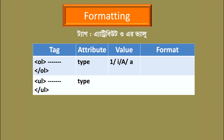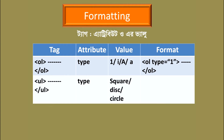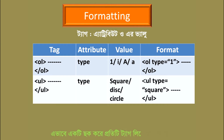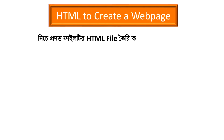The ordered list attribute types include Roman one, capital A, and small A. These are the forms of the type attribute in the ordered list.